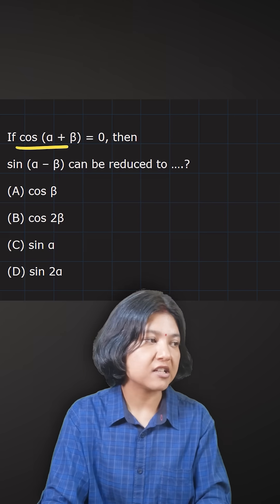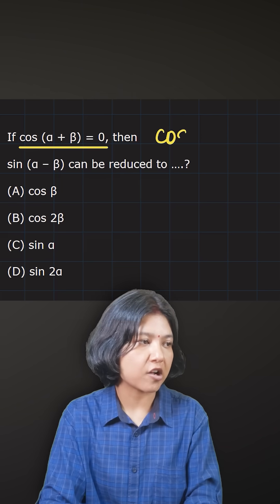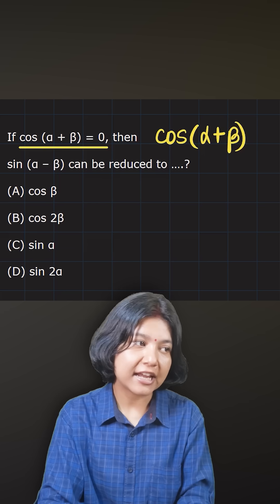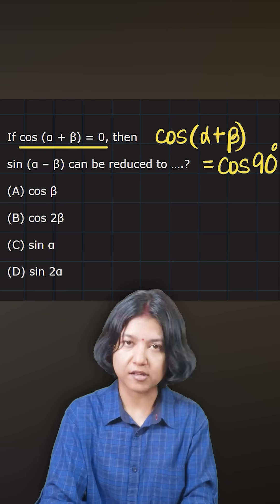Given cos(α + β) = 0. Now think about zero. When do you get zero for cos? When it equals 90 degrees. At 90 degrees, the cos ratio is zero.